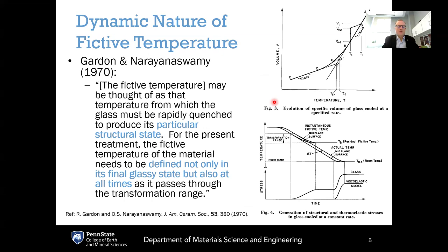Another monumental paper on fictive temperature is from Gardon and Narayanaswamy from 1970. They wrote that the fictive temperature may be thought of as that temperature from which the glass must be rapidly quenched to produce its particular structural state, and that the fictive temperature needs to be defined not only in the final glassy state but also at all times as it passes through the transformation range. This means fictive temperature can be defined at every point along the entire cooling curve, including through the glass transition region.